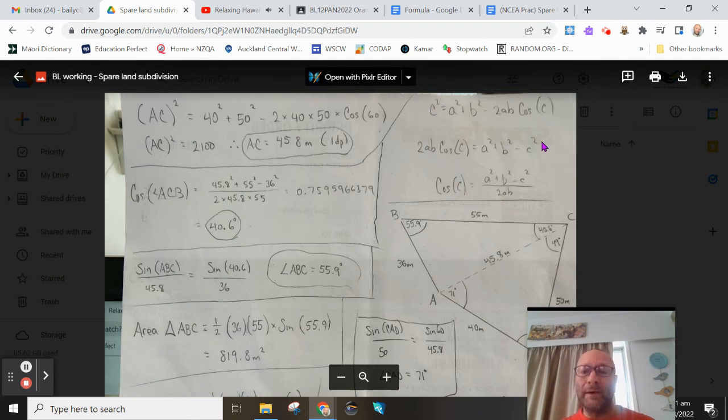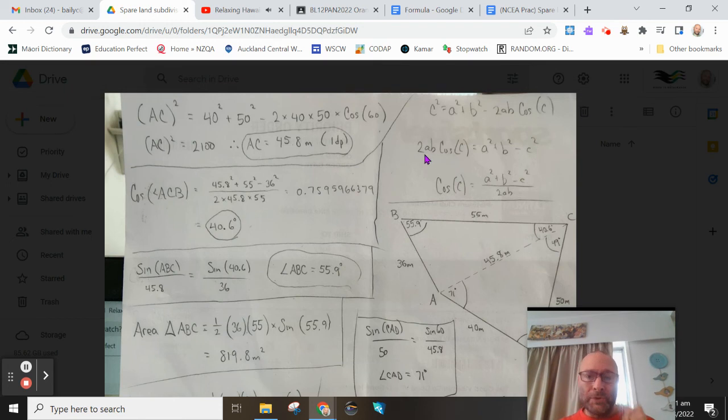And if I want to get 2 times A times B times the cosine of C, if I want to make the cosine of C the subject of my equation, well, how do you undo the multiplying? That's with dividing. So there is the cosine rule for angles. And we now see that angle ACB comes out to be 40.6 degrees.